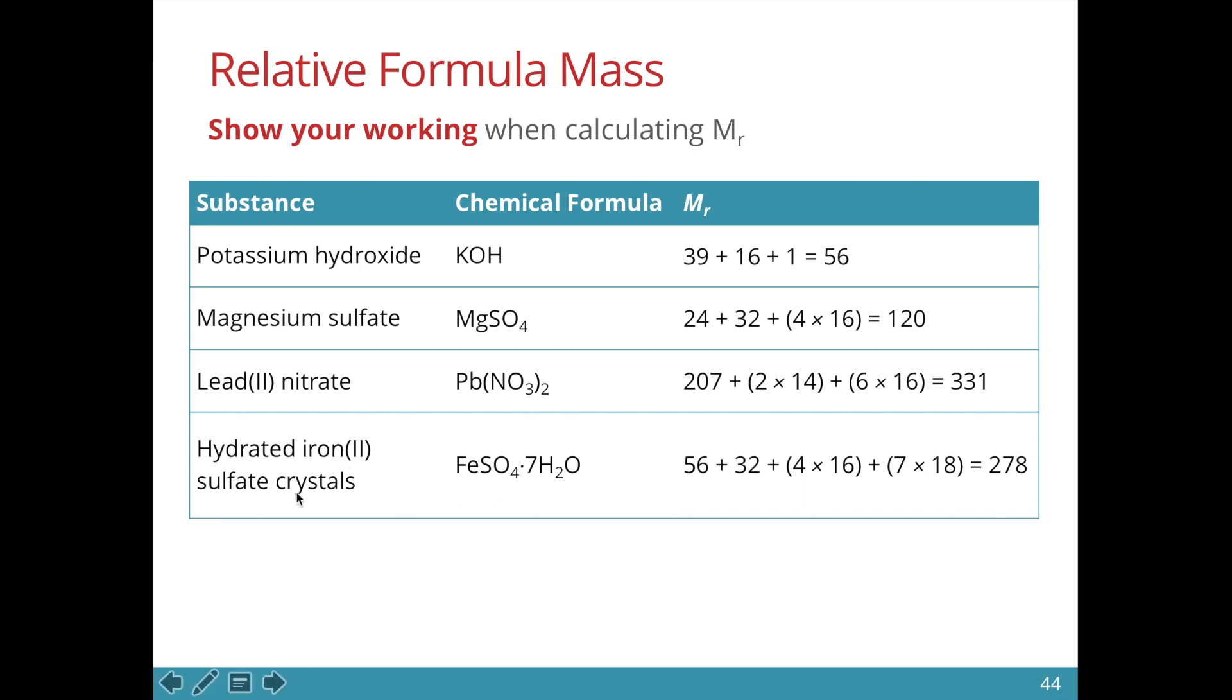Lead 2 nitrate, Pb(NO3)2. So 1 lead ion, 207, 2 nitrogen and 6 oxygen. So when we have brackets like that, you must remember to multiply by the number that is outside.